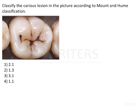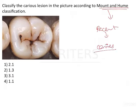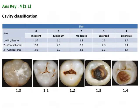Classify the caries lesion in the picture according to the Mount and Hume classification. The Mount and Hume classification is a recent classification given for caries. It is a two-digit classification system, as you can see from the options — there are two digits present. Let us have a look at what this classification is.